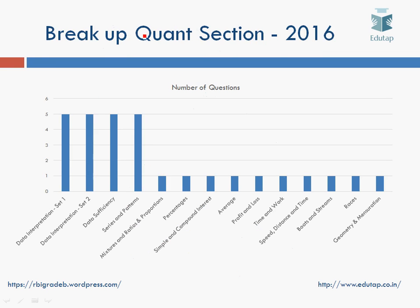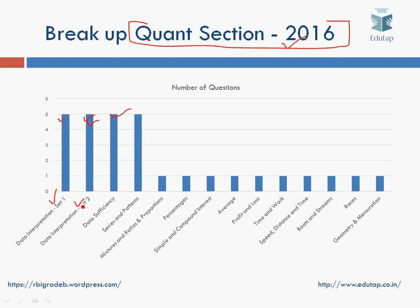This was the breakup of the quant plus DI section in 2016. There were two caselets on DI worth ten marks — five questions each. There were also five questions on data sufficiency and five questions on series and patterns, specifically number series and patterns.